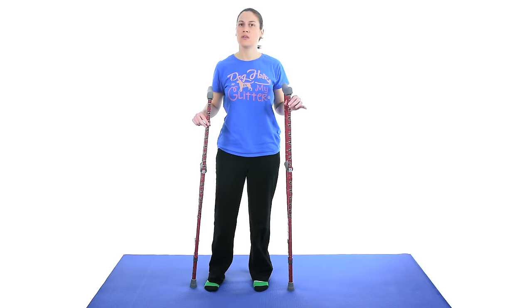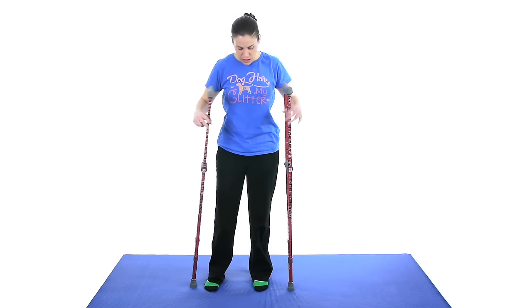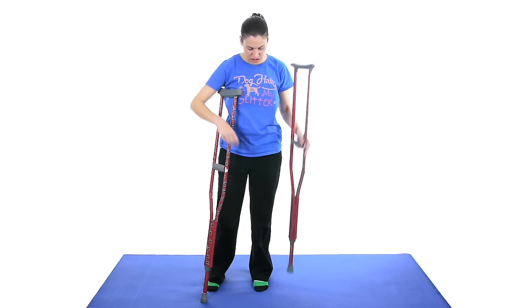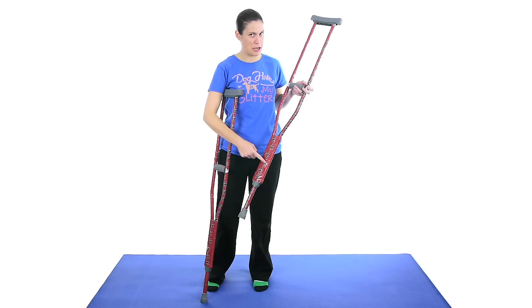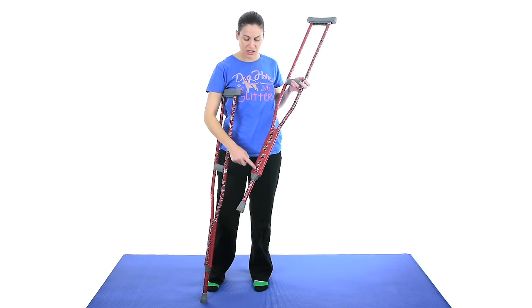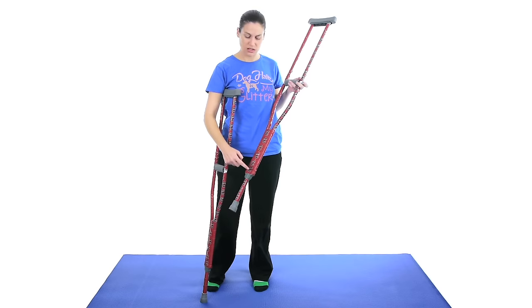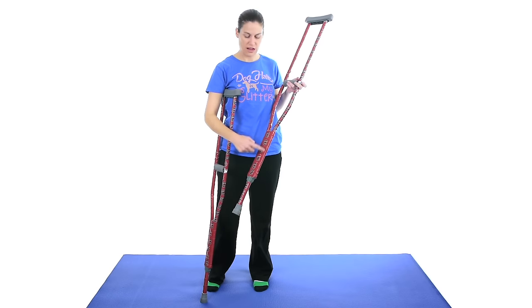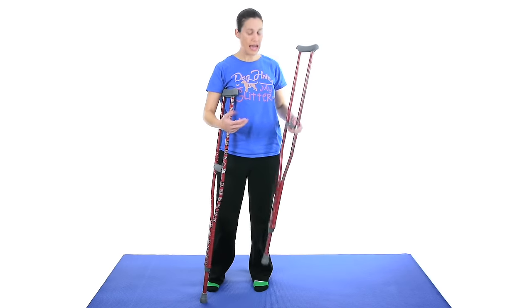But let me start off with showing you how to get the right height for you. When you first get your crutches, the buttons here, which you can't see because they've got some cool Gamecocks over them, actually have height. So it starts off 5'3, 5'4, 5'5, 5'6, and it's pretty accurate.